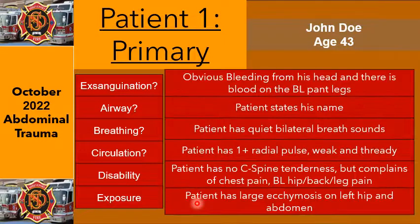We start with exsanguination. We have obvious bleeding from his head, and there's blood on the bilateral pant legs. He's able to talk and state his name. He has quiet bilateral breath sounds, 1-plus radial pulse — weak and thready. He has no C-spine tenderness but complains of chest pain and bilateral hip, back, and leg pain. He has a large ecchymosis on the left hip and abdomen. This is a serious injury — multiple complaints with a high-velocity MOI.